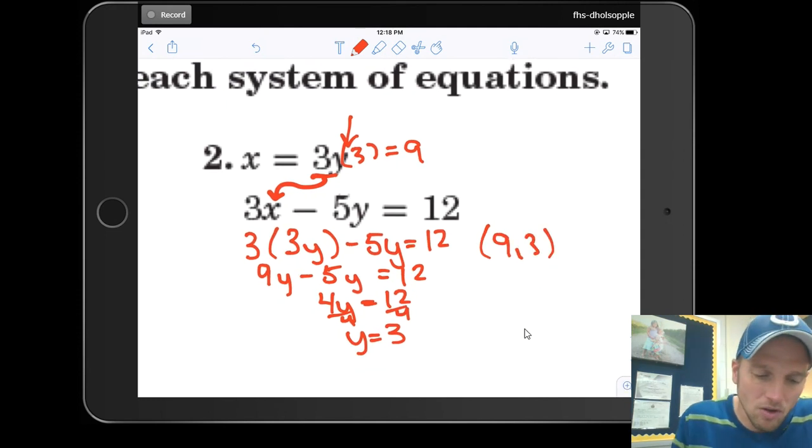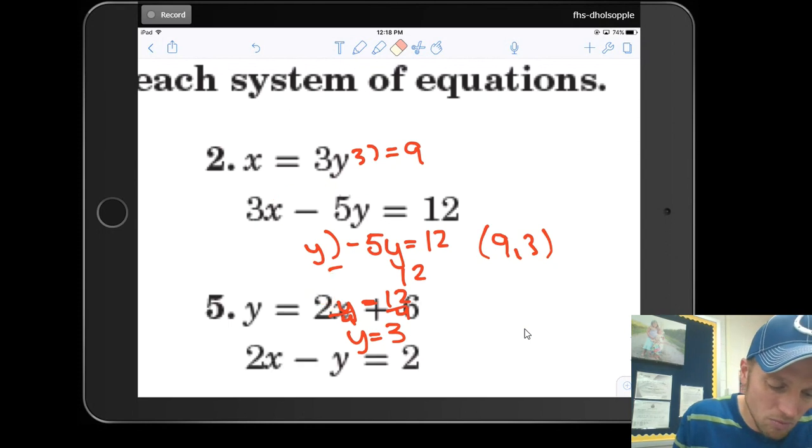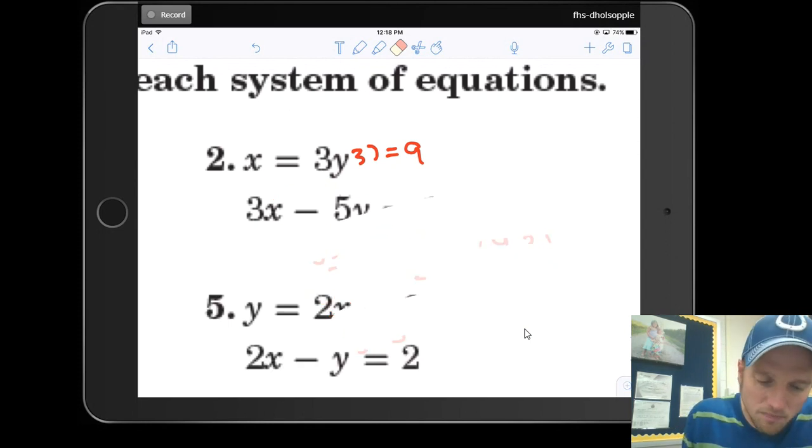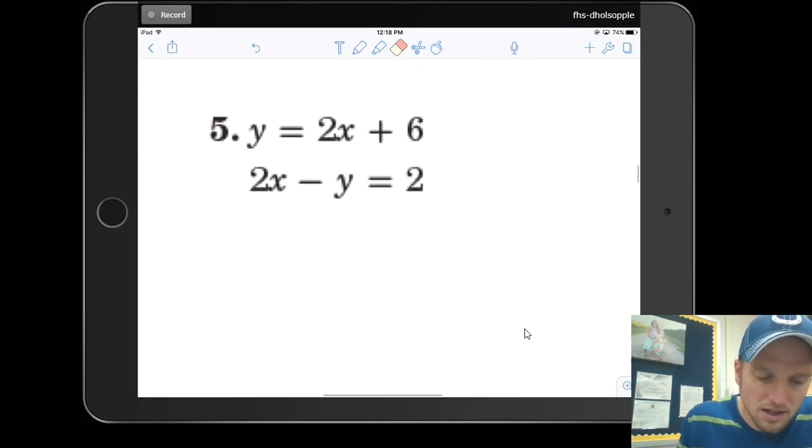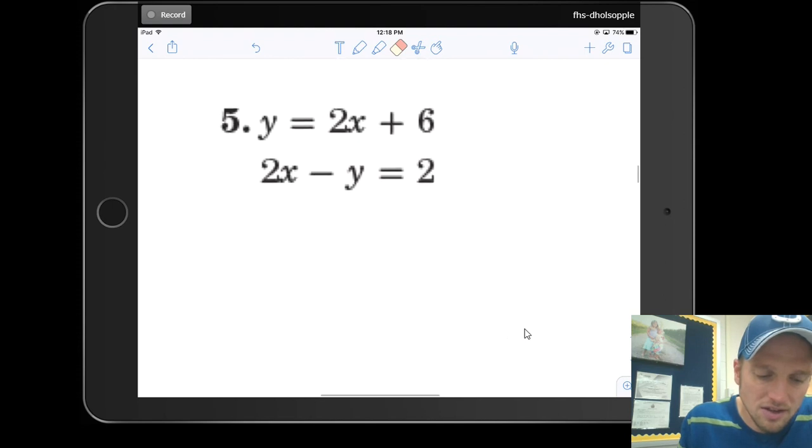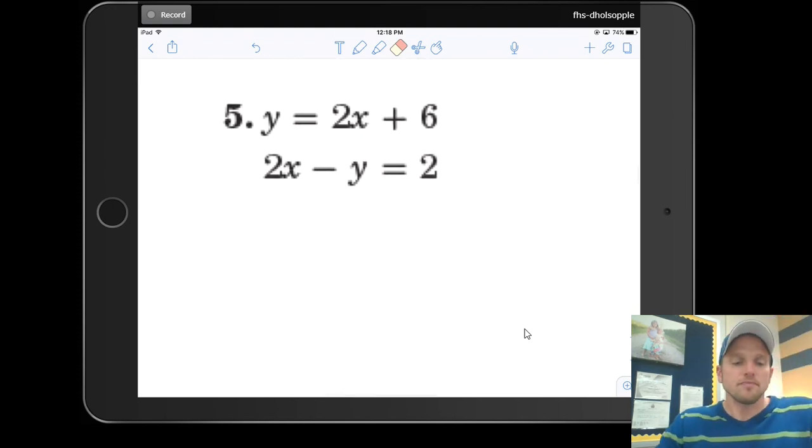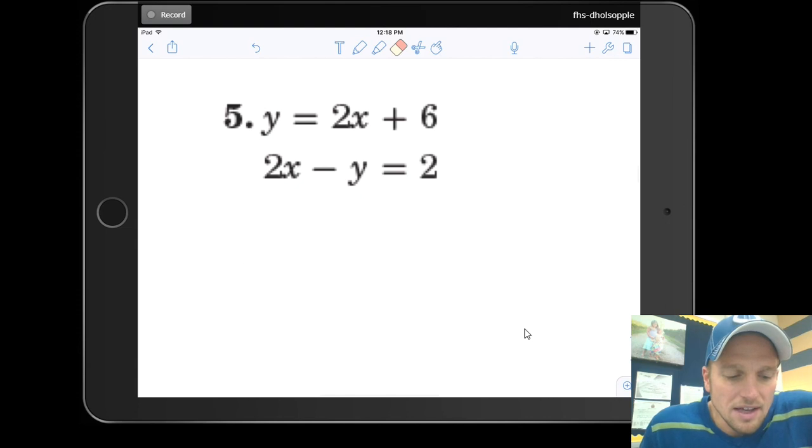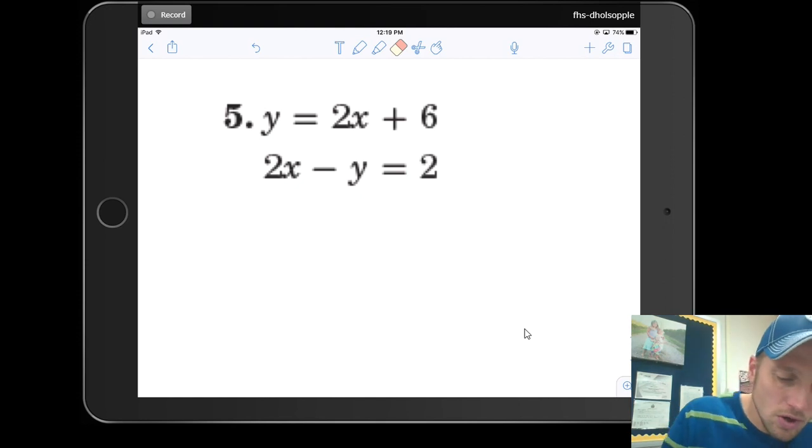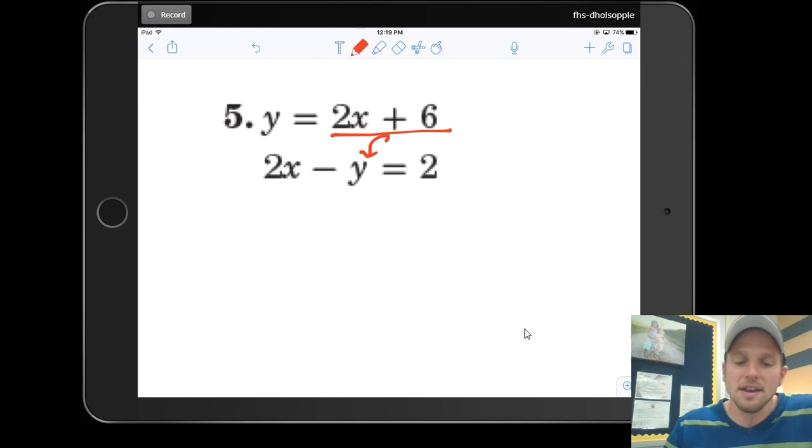Well, that's not bad at all. Let's get a little bit more difficult with this, though. Let's look at this one. I've got y equals 2x plus 6 and 2x minus y is equal to 2. Well, I know that y is the same thing as 2x plus 6, so I'm going to substitute that into this second equation for y.